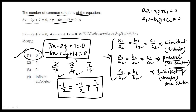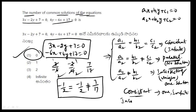If all ratios are equal, the lines are coincident — infinite solutions, and the system is consistent. If A1/A2 equals B1/B2 but not C1/C2, the lines are parallel — no solution, and the system is inconsistent. If A1/A2 is not equal to B1/B2, the lines are intersecting — exactly one solution, and the system is consistent.